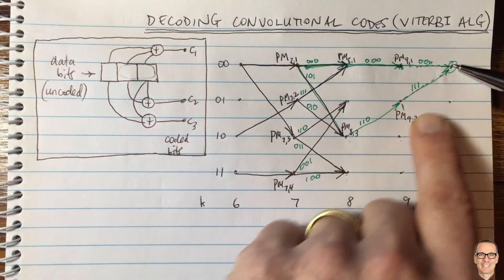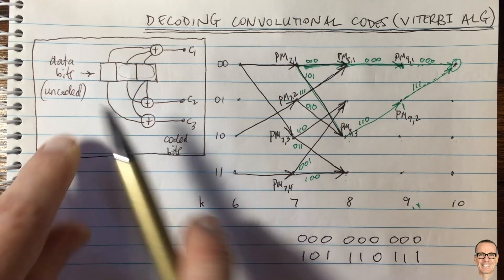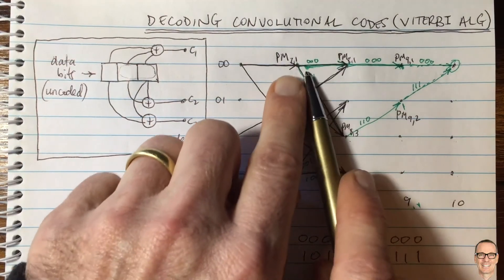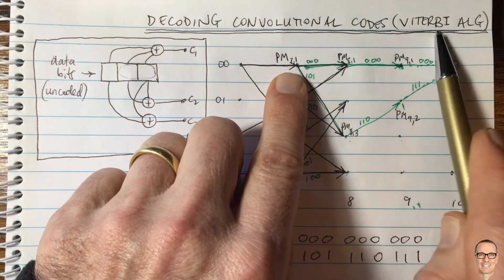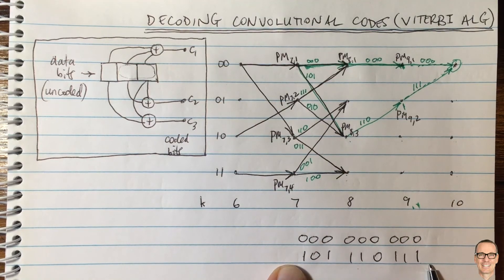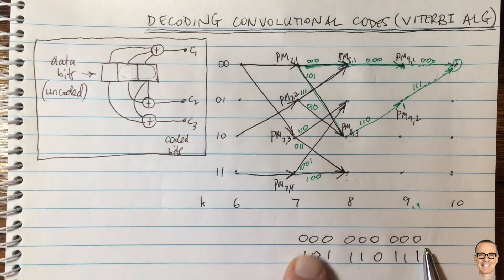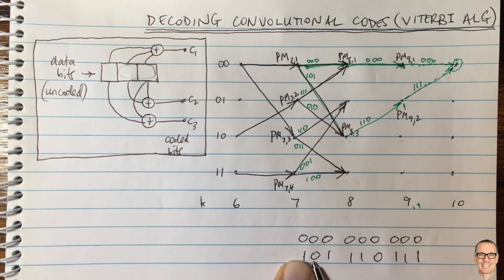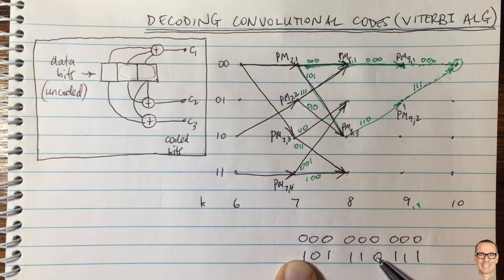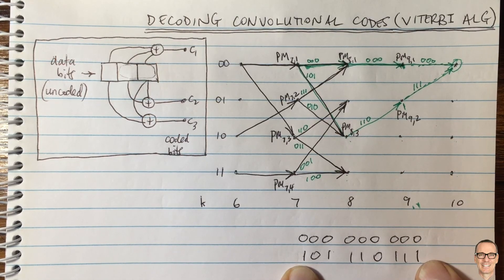Once only one path survives to the end, you just trace back along that path to recover the decoded data. The key point is that the memory in the convolutional code is used by the Viterbi algorithm — by comparing sequences rather than individual bits. The structure is exploited in the decoder because the long sequences being compared have many differing bits, so you need many errors before you'd make the wrong decision.